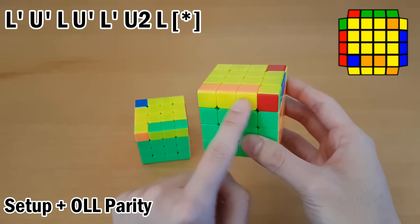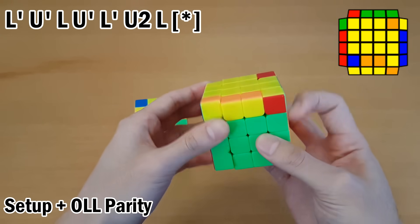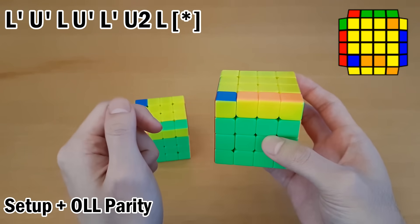So what I prefer to do instead is with this side that has the block, you do soon with this hand. And then that gives you OLL Parity.